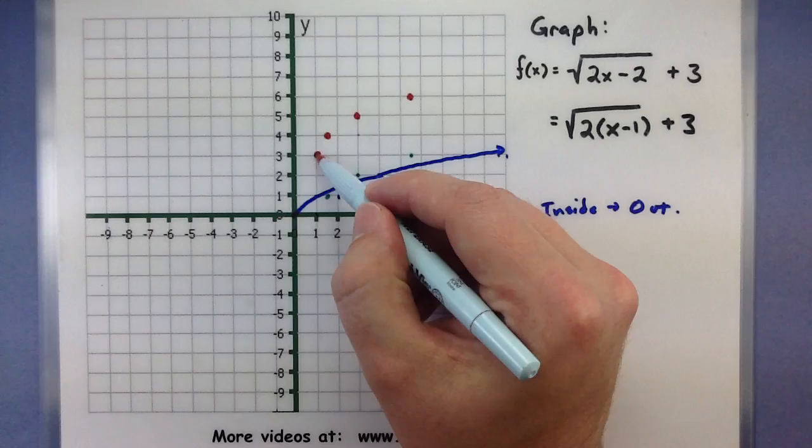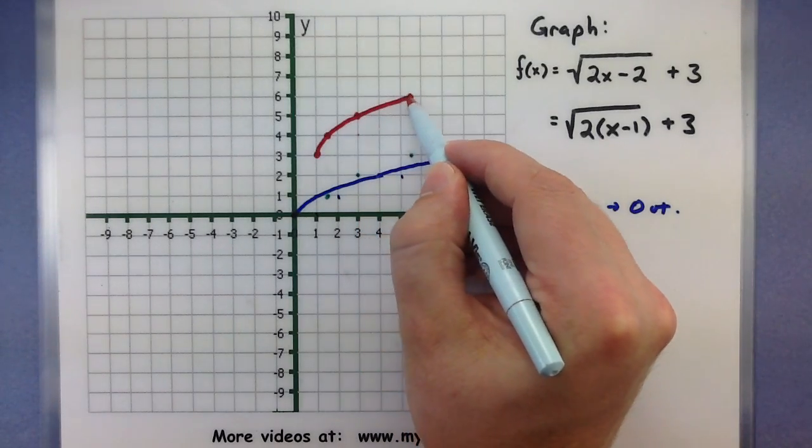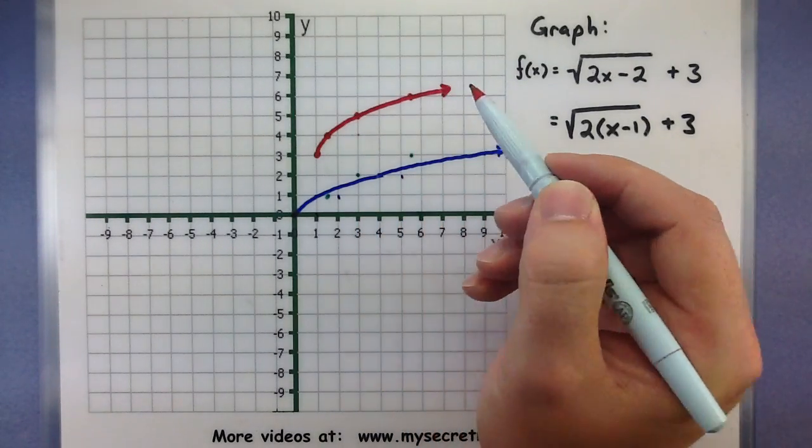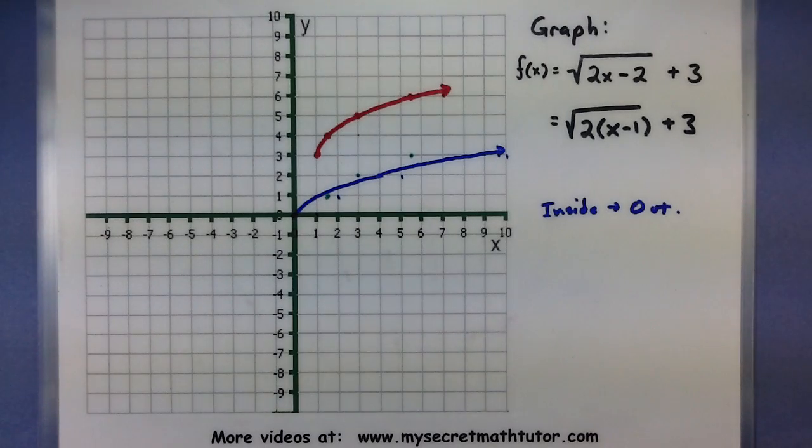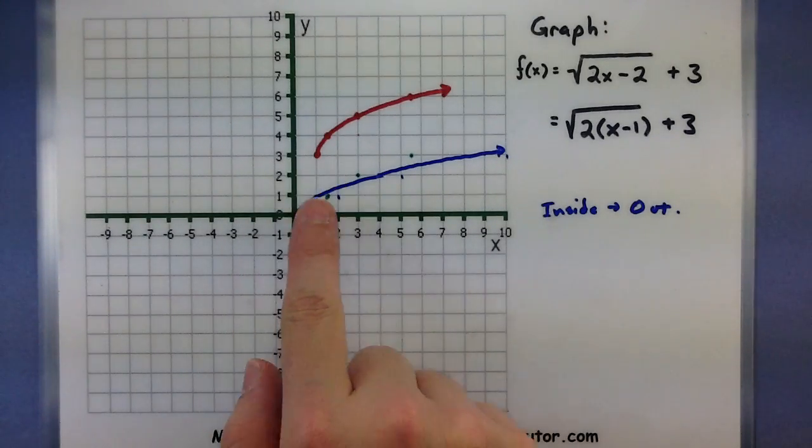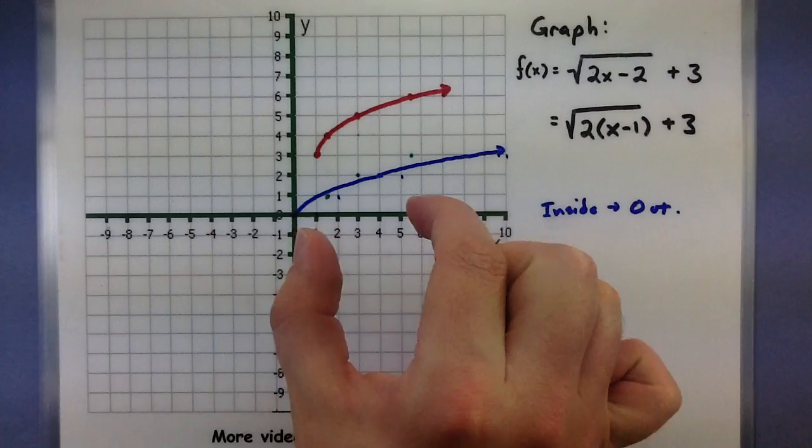All right so there are all of our new values. And there's our new graph. That one represents the square root of 2x minus 2 plus 3. And you can see how it has all those features. You know we're getting these shifts, it's being moved, and it's being shrunk horizontally.